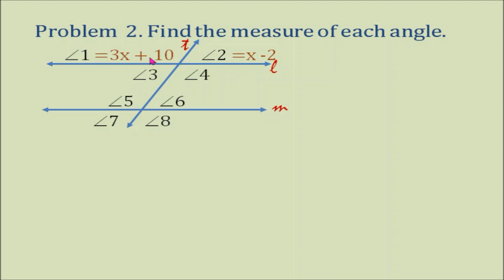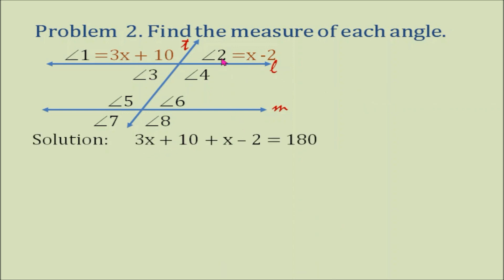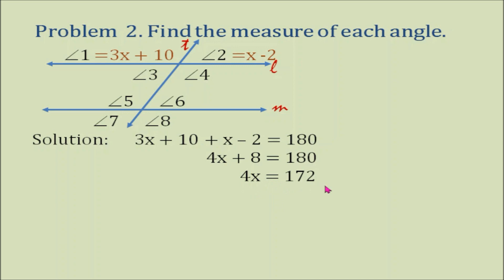First, we are going to solve for the measure of angle 1. We know that angle 1 and angle 2 form a linear pair, so angle 1 plus angle 2 equals 180 degrees. That gives us (3x + 10) + (x − 2) = 180. Combining like terms: 4x + 8 = 180. Subtracting 8 from both sides: 4x = 172. Dividing both sides by 4, x = 43.